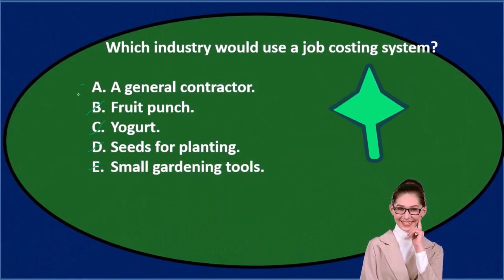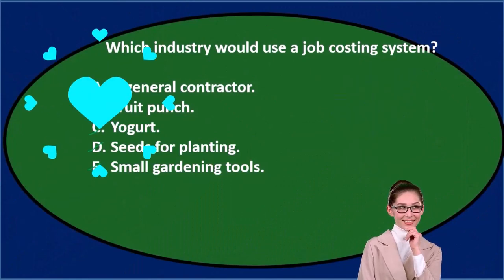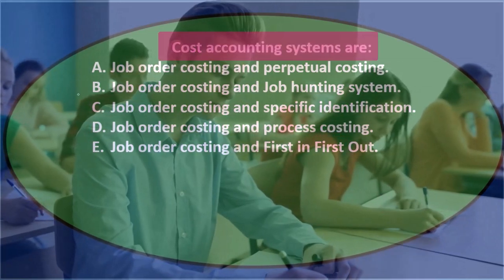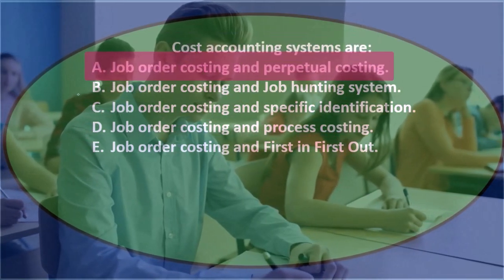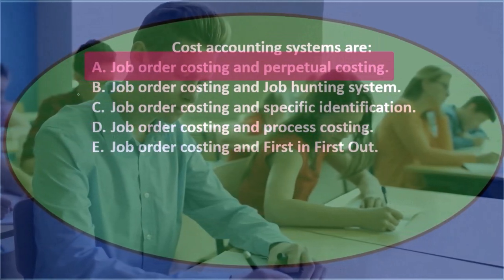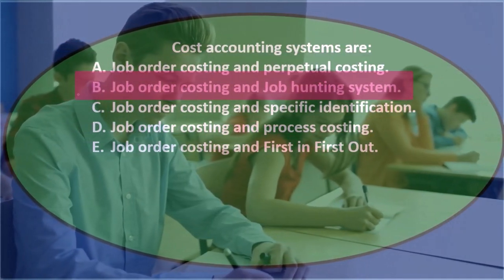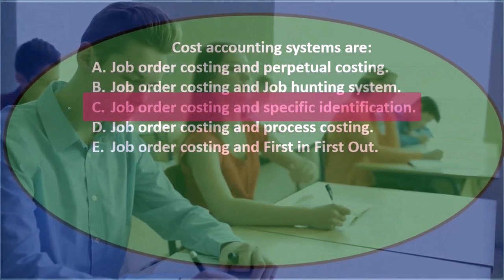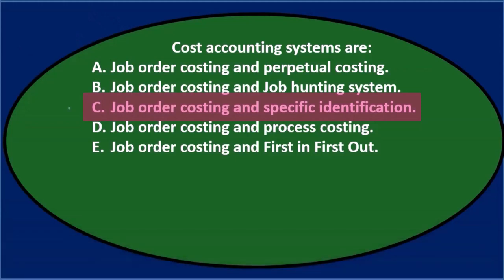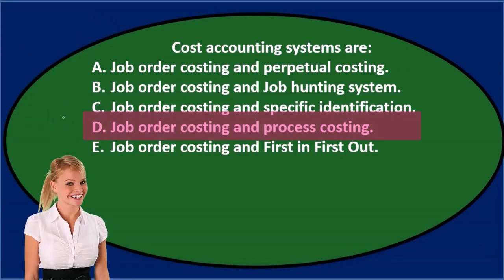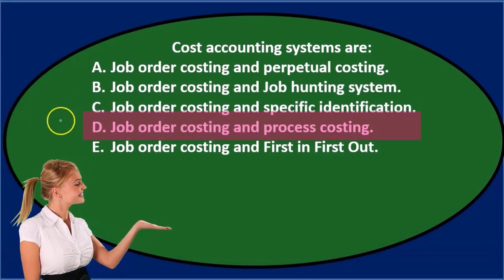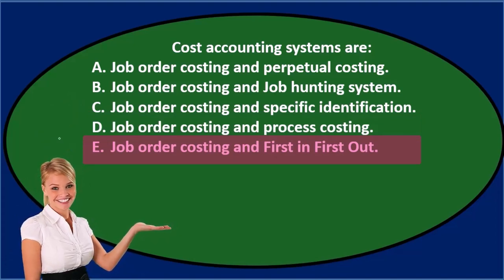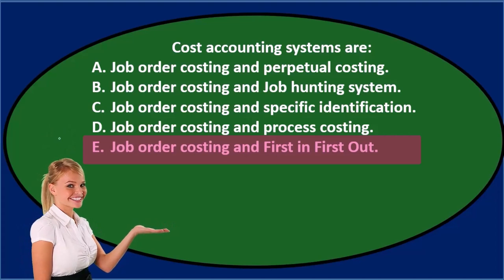Which industry would use a job costing system? A: a general contractor. Next question: cost accounting systems are — A) job order costing and perpetual costing, B) job order costing and job hunting system, C) job order costing and specific identification, D) job order costing and process costing, E) job order costing and first-in first-out. Let's go through this using the process of elimination.